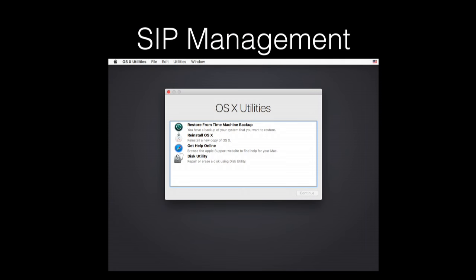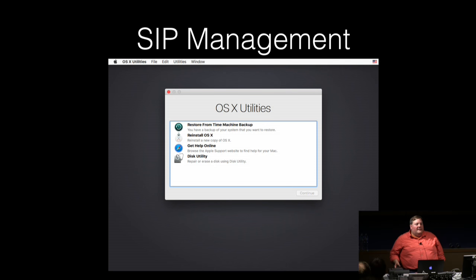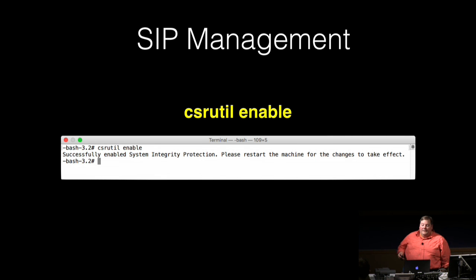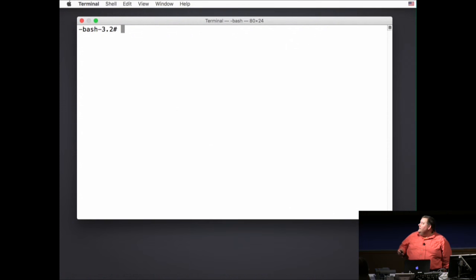To help ensure that SIP cannot be turned off or otherwise affected by malware or other attacks, it can only be disabled while booted into the recovery environment — like Recovery HD or Internet Recovery. When booted from recovery, the command used to enable SIP is csrutil enable.